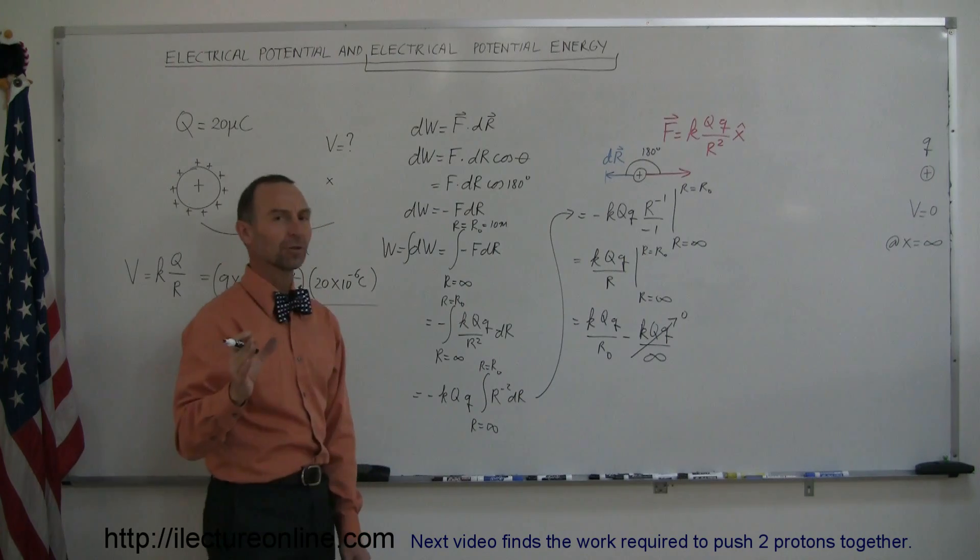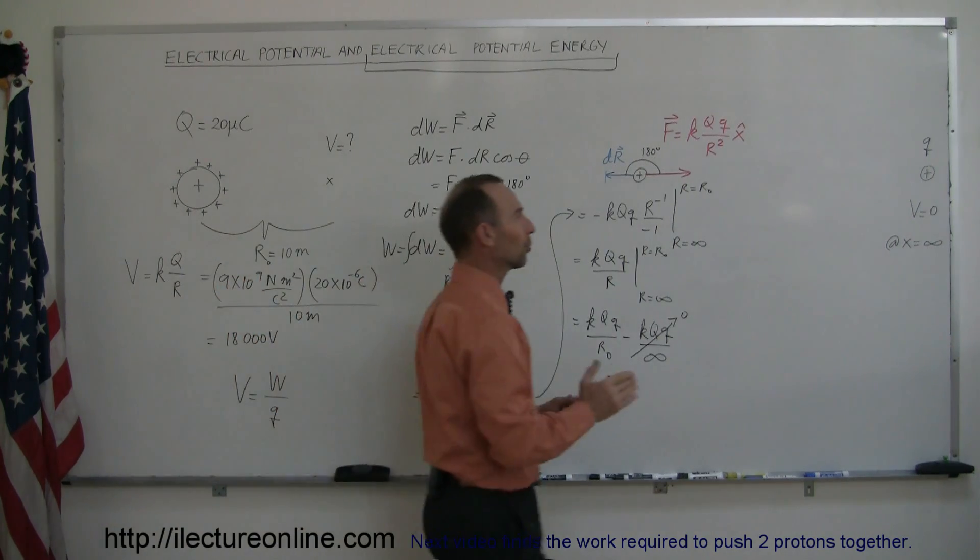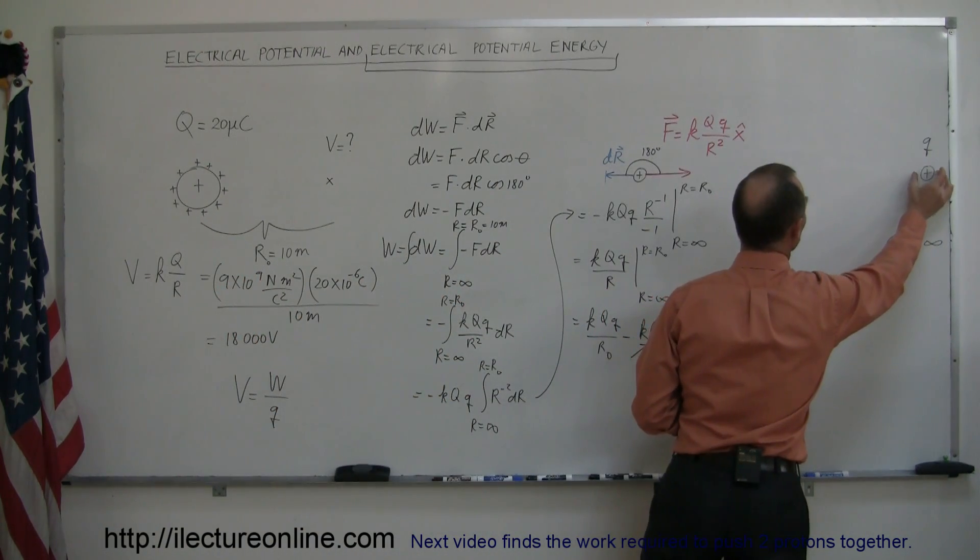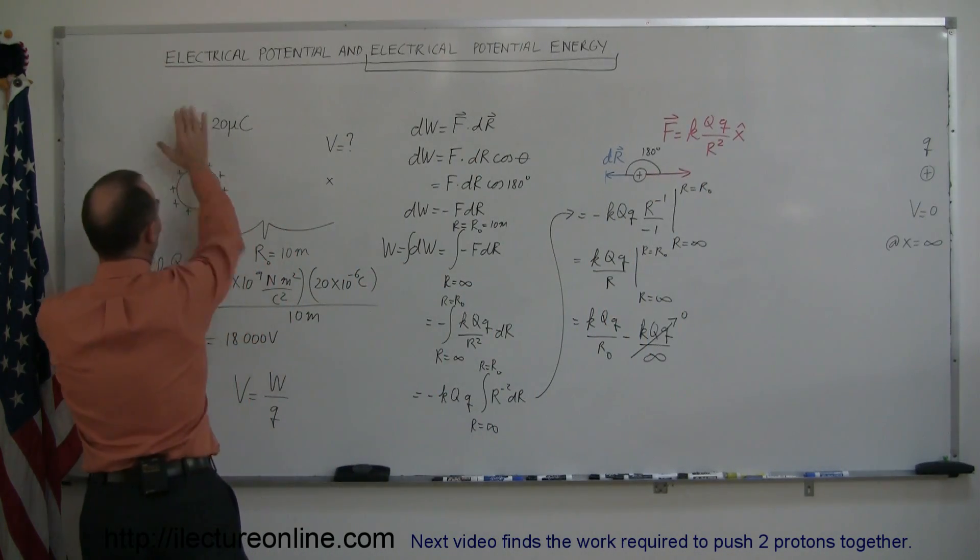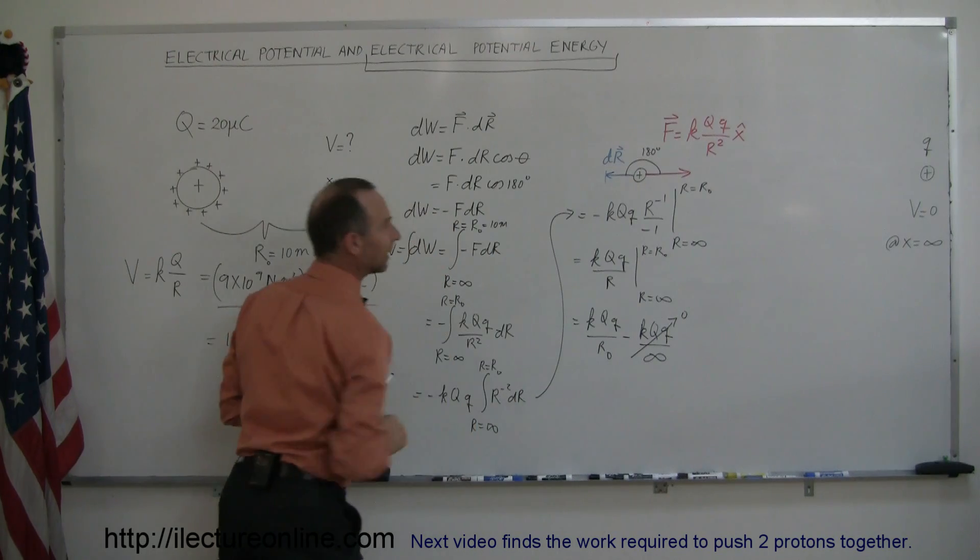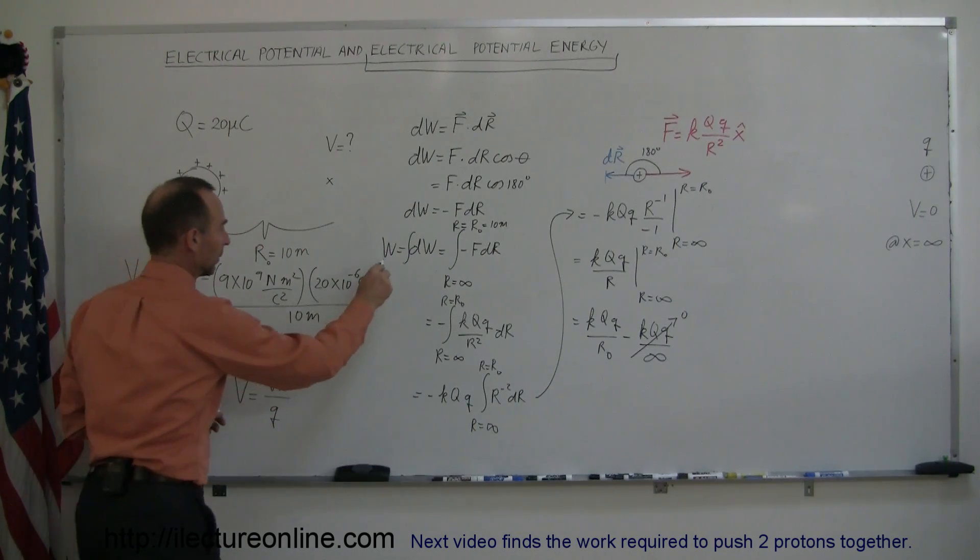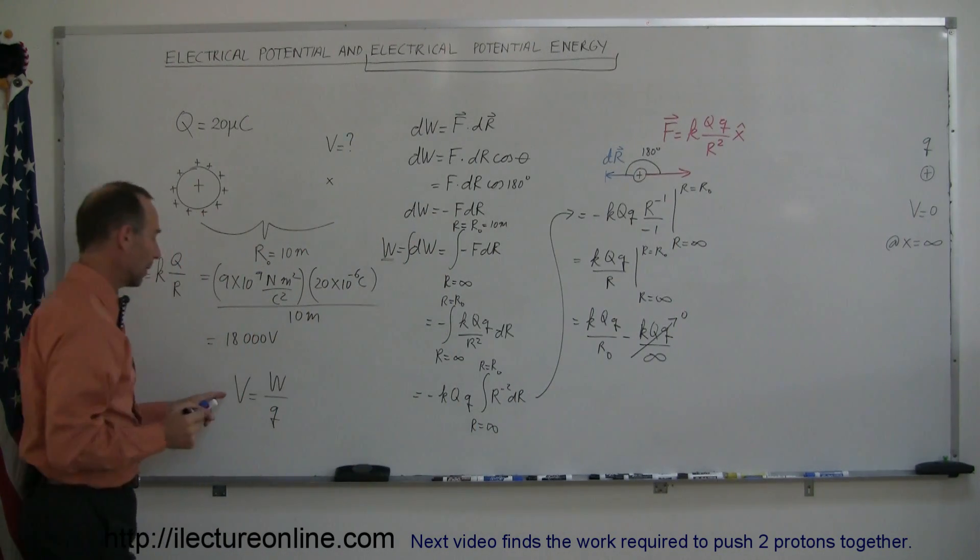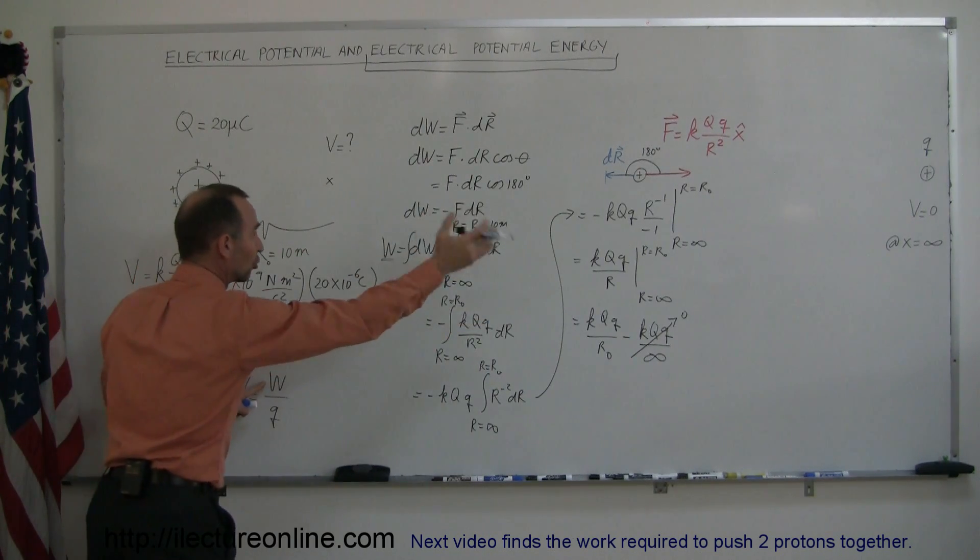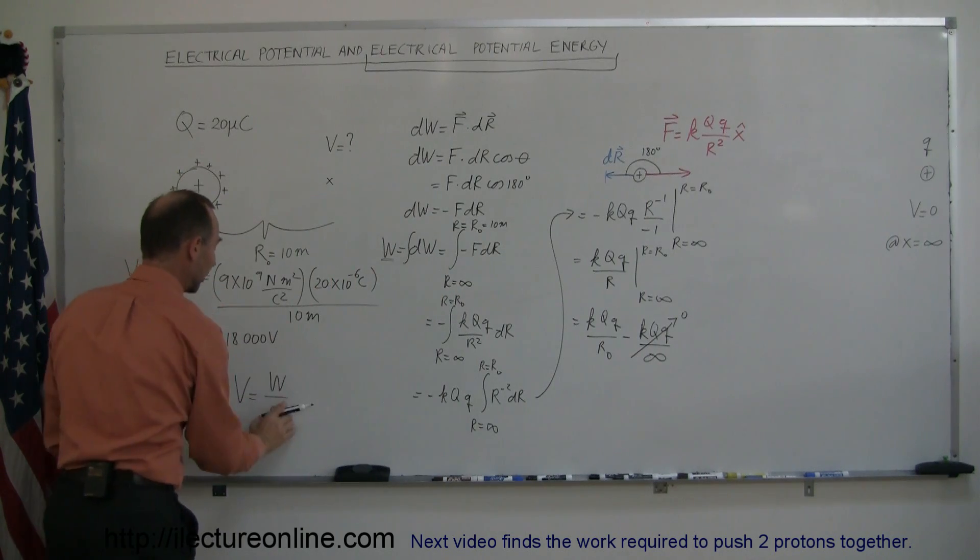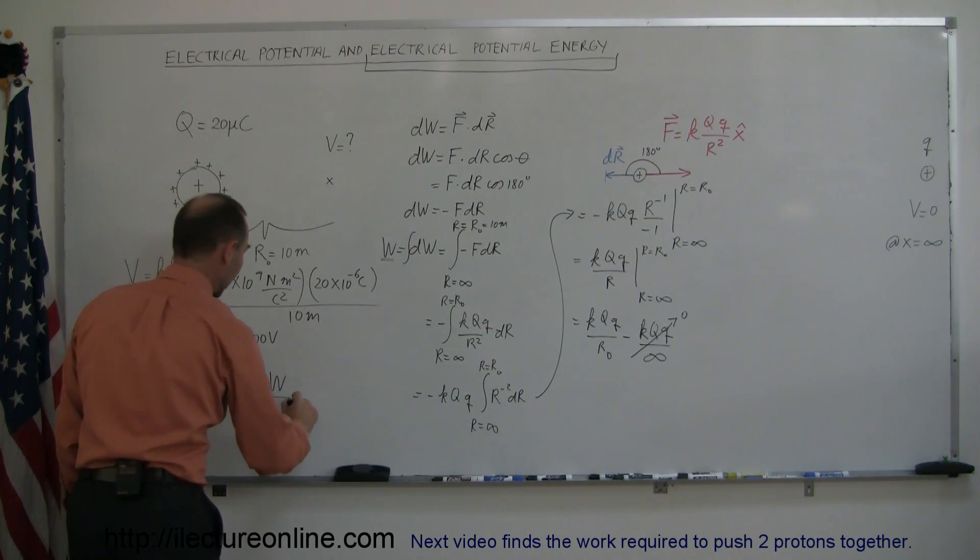Now remember what we're trying to do, we're trying to figure out how much work it would take to take a charge q and bring it all the way within the vicinity of a charged object, big q. That's the work done to get it there. Remember the definition for potential. The potential is the work to get an object or charge to that location divided by the size of the charge.